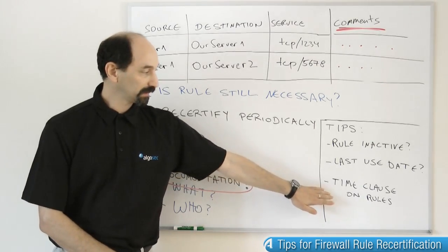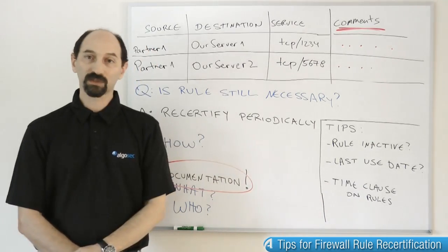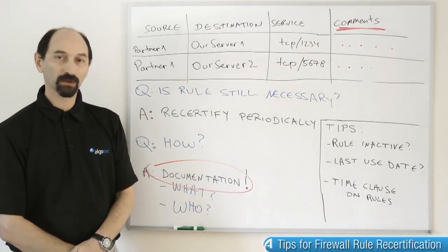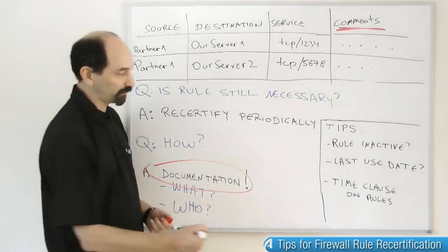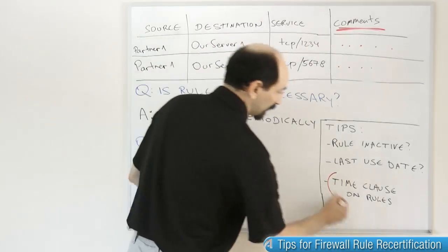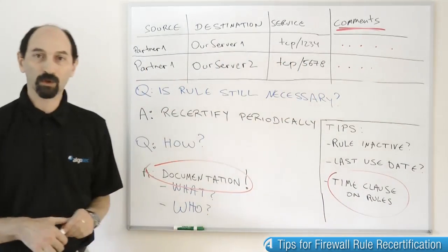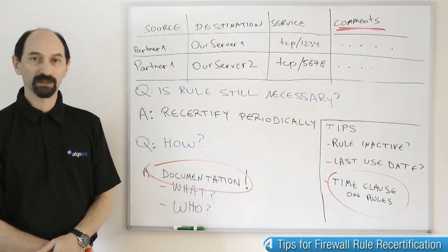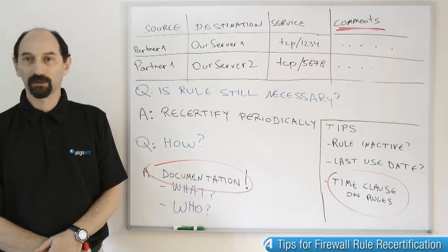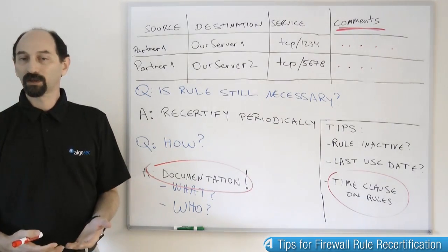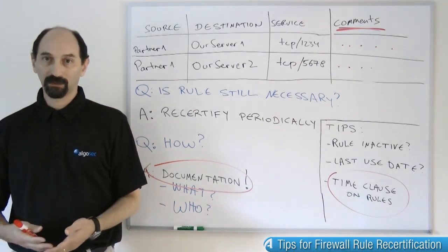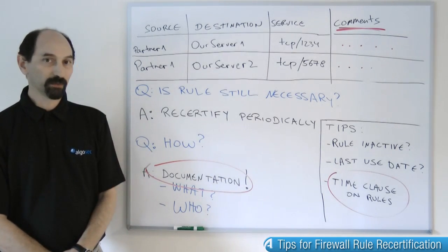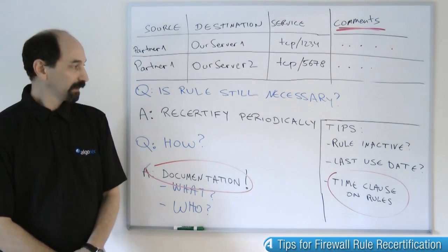Another trick you could use is time clauses. Most vendors allow you to attach a time clause to a rule so that you can specify that the rule is only active until, say, December 31st of next year — after that, it stops working. Once rules stop working and nobody's complaining, that's obviously a good trigger to eliminate them permanently.